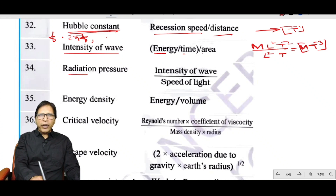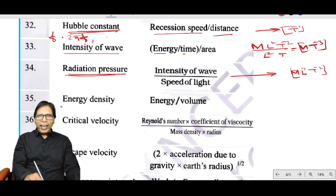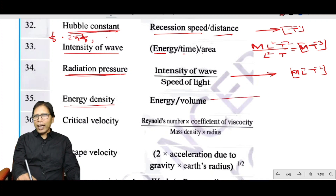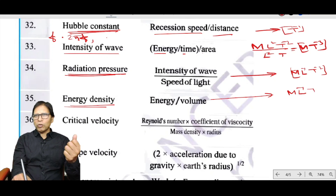Radiation pressure has the same dimension as pressure: ML⁻¹T⁻². Energy density also has the same dimension as pressure, stress, Young's modulus, bulk modulus, and modulus of rigidity: ML⁻¹T⁻².